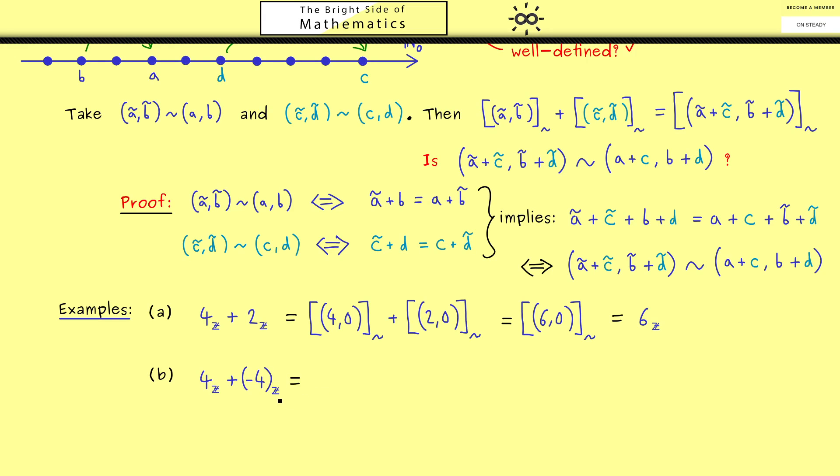Hence let's try something new by adding 4 and -4. Here we need to use that -4 is given by the equivalence class of [0,4]. And then we can just use the definition of the addition again, which means that we get [4,4] here. However, this is the same as the equivalence class of [0,0]. And we immediately see this is just the integer 0.